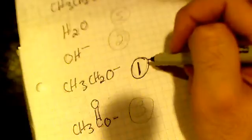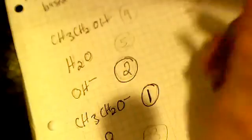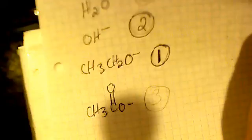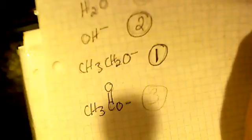Because it's the weakest acid, it's going to be the stronger base, so it's a better nucleophile. Then comes hydroxide, because its conjugate acid, water, is the second most acidic. So its conjugate base is going to be the second best base, making it the second best nucleophile.